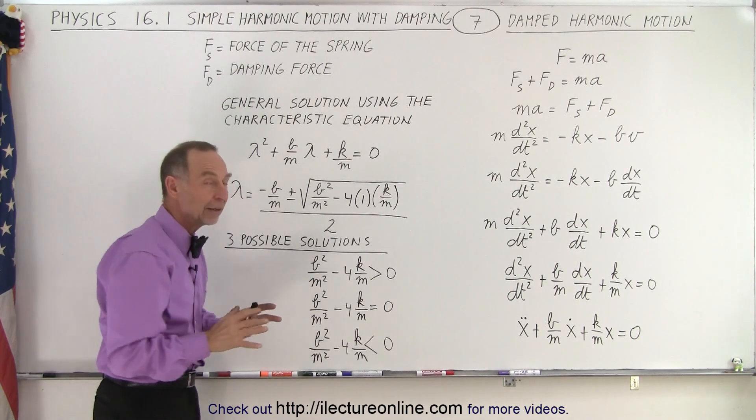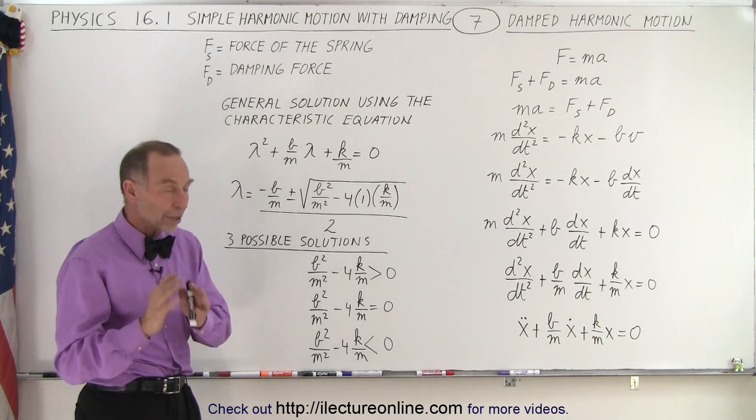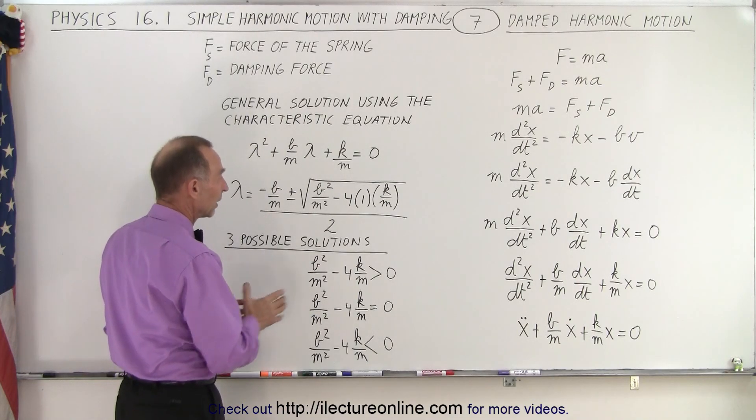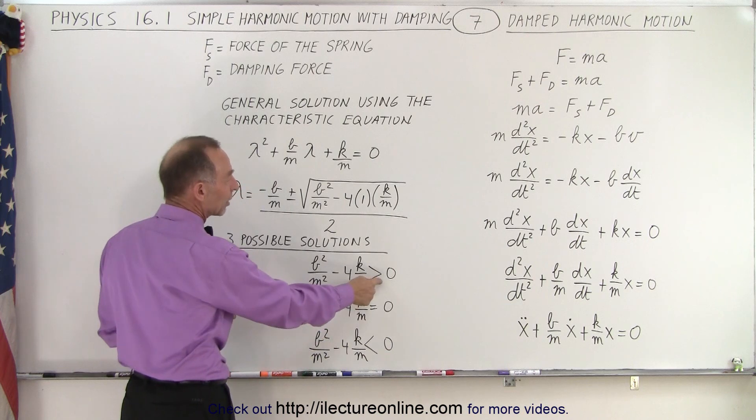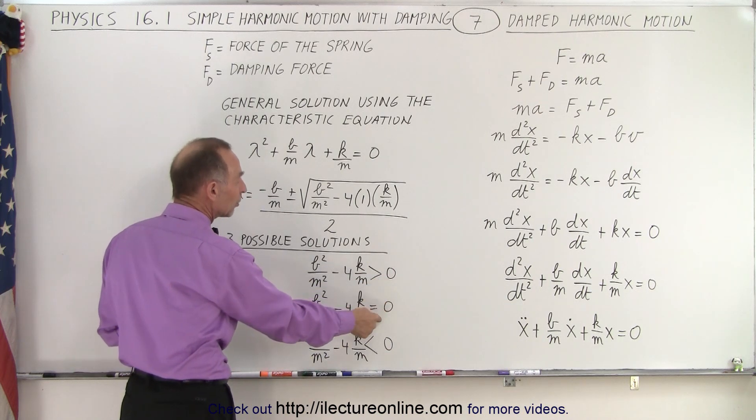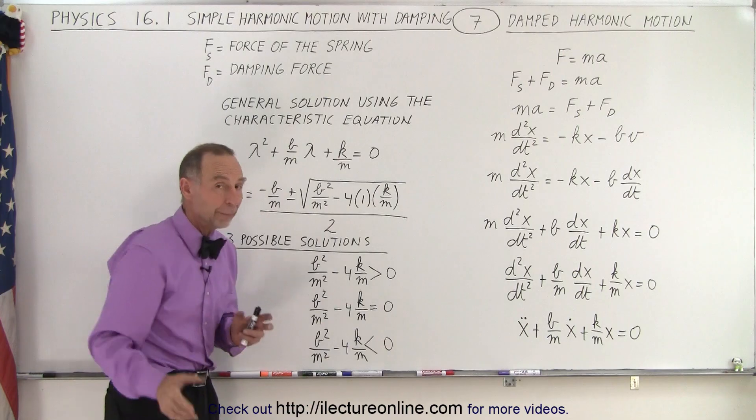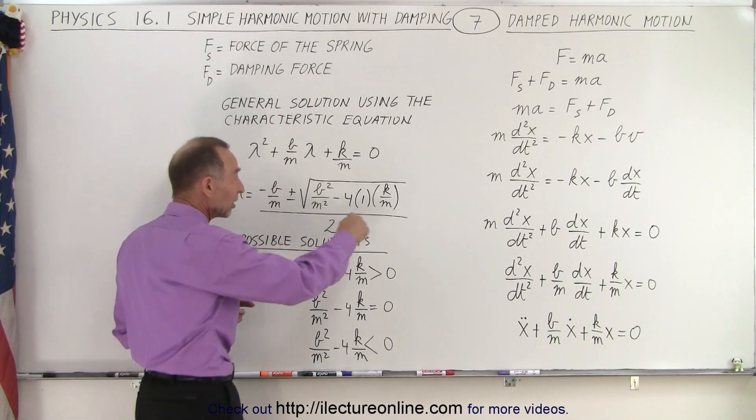And then we realize that this lends itself to three possible solutions of the differential equation. Because when we look at the radical, what's underneath the radical can either be greater than zero, can either be equal to zero, or can either be less than zero. Depending upon what the situation is here,